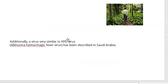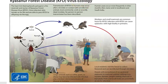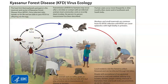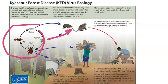A similar virus has been found in Saudi Arabia according to CDC reports. Looking at the transmission cycle diagram: the tick lays eggs and passes the virus transovarially to its offspring — it is infected for life and transmits to its own children. In the nymph stage, the tick infects monkeys.